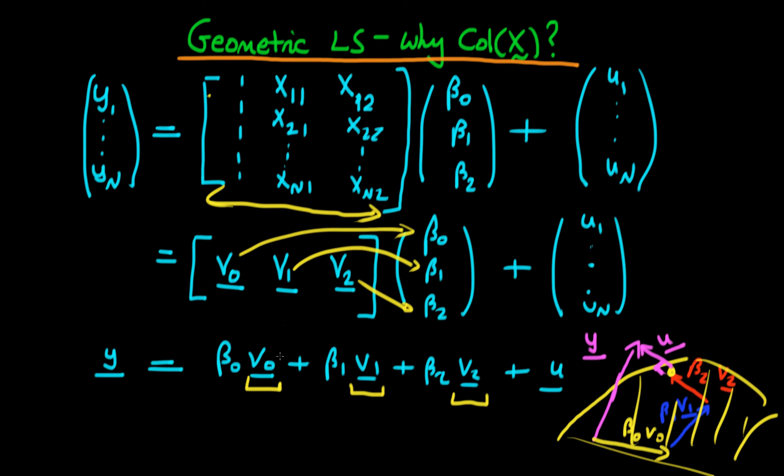But the bottom line is because of the way in which we can write our matrix, we can think about each of these columns as representing a vector. And hence we can think about the space which is spanned by each of the different columns in our matrix as representing some sort of vector space. And we call that vector space the column space of X.